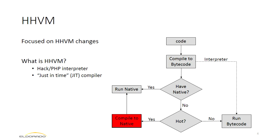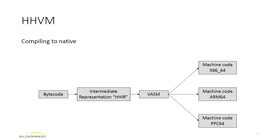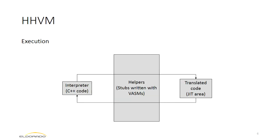The 'compile to native code' box was the part of the code we most contributed to the community. To expand: it receives bytecode, an intermediate representation is generated, and then a VASM — virtual assembly — is generated. Initially HHVM had just x86 support, and then we added Power, and later ARM appeared. When the HHVM needs to run the translated code, it needs to call some helper functions. The interpreter runs in C++ code, and in order to enter the JIT area it needs helper functions to make adjustments for entering and exiting that area.